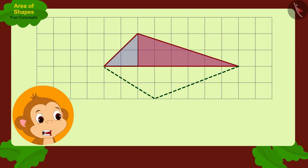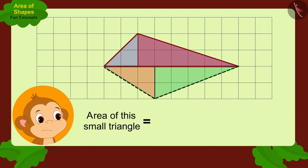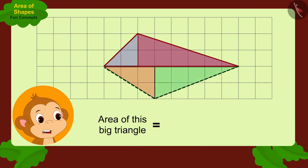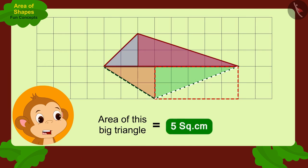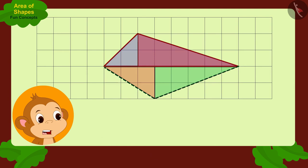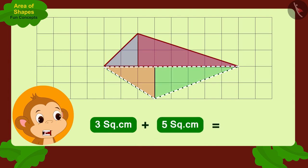If I draw two such lines, then two triangles are being formed in this part of the box. The area of this small triangle will be half of this rectangle, or three square centimeters. And the area of this big triangle is half of this rectangle, or five square centimeters. In this way, the area of this part of the box is three plus five — eight square centimeters.